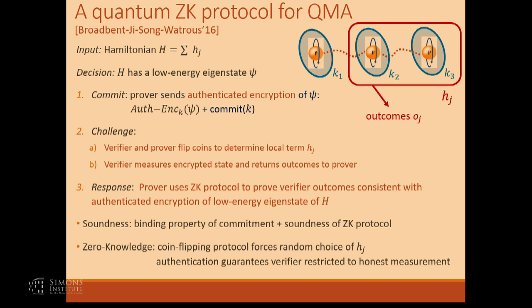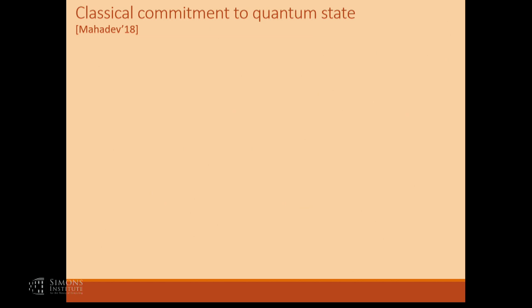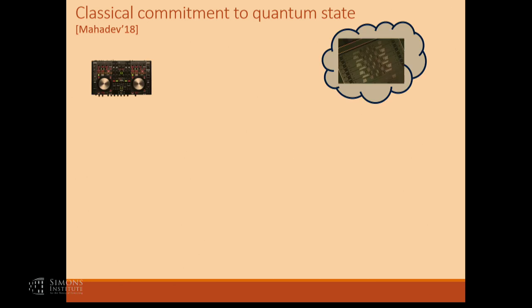In a way that the prover is bound to reporting measurement outcomes associated with the state it has committed to, without being able to change its mind. If we had such a thing, we'd just plug it in and be almost done. This is what's behind the Mahadev protocol for verification. Let me tell you what is a classical commitment scheme to quantum states. The scheme has the following properties — it achieves what I described. It's a scheme between a classical verifier and a quantum prover.